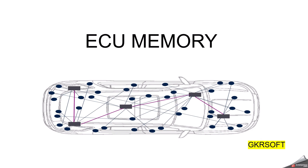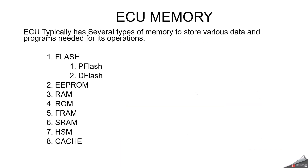In today's vehicle, it may contain 100 ECUs or more. The commonly used microcontrollers inside ECU are Freescale or NXP, Infineon Tri-Core, Renesas RH850, STM32 or Texas Instruments. In this video, we will discuss more deeply about commonly used memories inside the ECU.